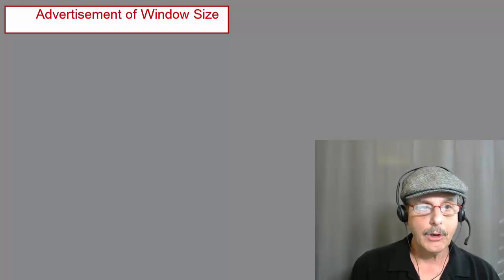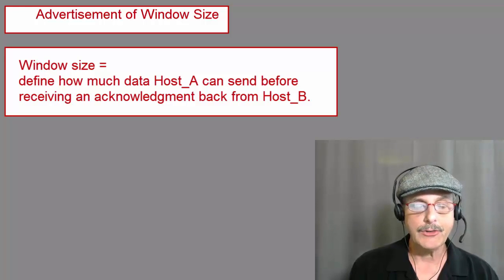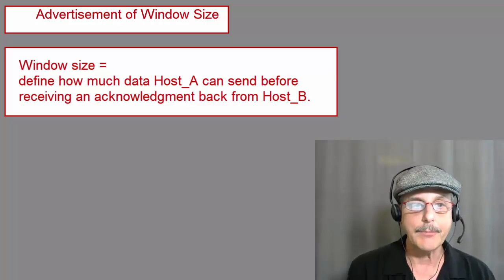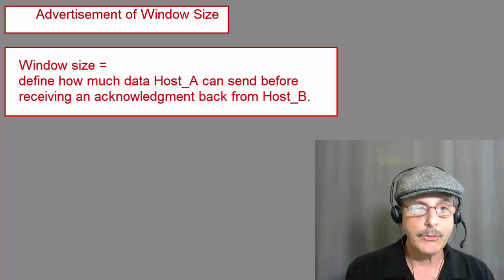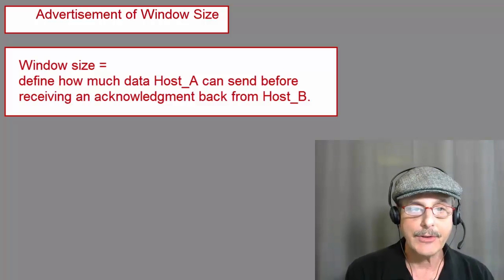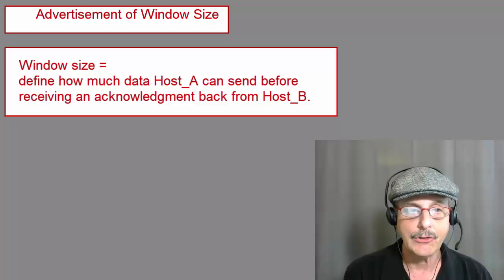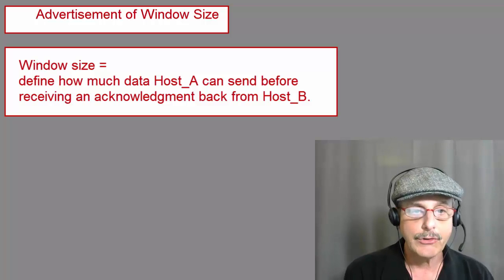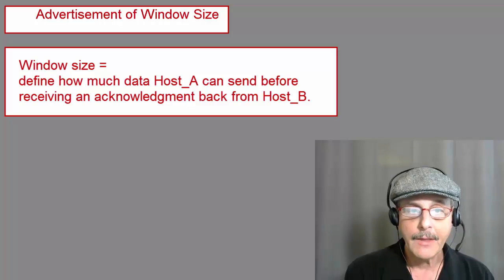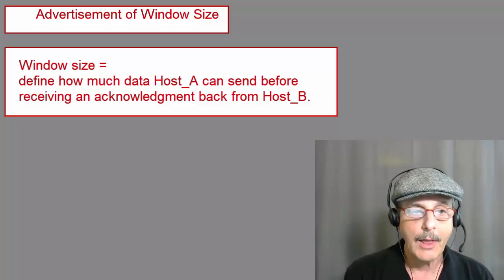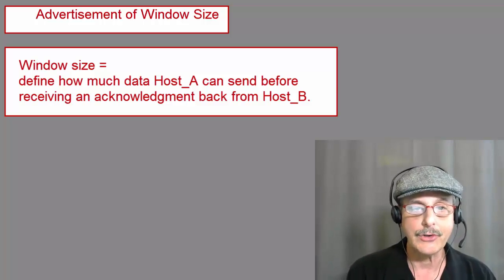Finally, we go to the last function of the three-way handshake, which is advertisement of window sizes. Where does the window size come in? It defines how much data host A can send before receiving an acknowledgement back from host B. Suppose host A advertises a window size of 8,000 bytes. In this way, host A is saying to host B: don't send me more than 8,000 bytes until I send you an acknowledgement. And host B must obey. This is not a negotiation.